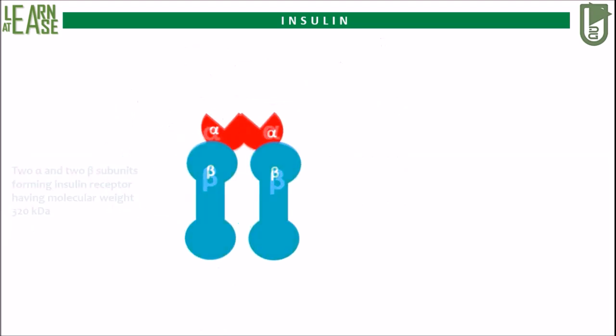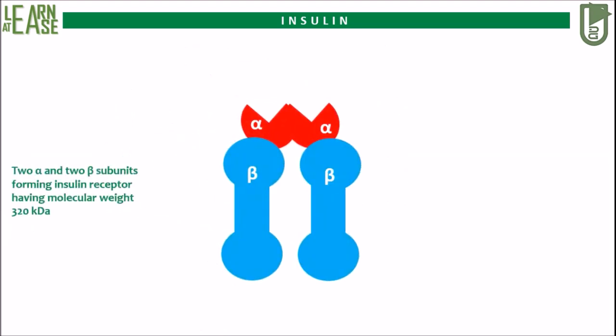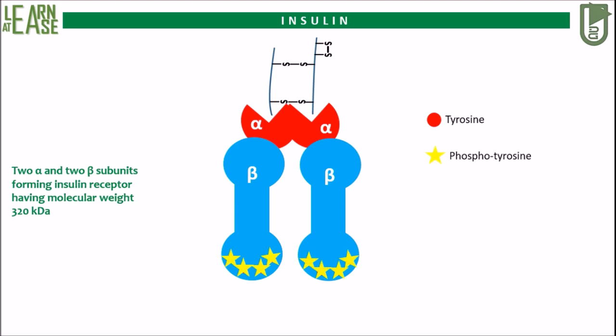Here the detailed mechanism of receptor activation is shown. The insulin receptor is a heteromeric protein having 320 kiloDalton molecular weight. The cytosolic region of the beta subunit possesses several tyrosine residues. When insulin binds to the receptor, the alpha subunits will drive the change in conformation of the beta subunits. This causes autophosphorylation of various tyrosine residues in the beta subunit. Thus, the tyrosine residues will become phosphotyrosine, which will then act as second messengers. Due to these phenomena, the insulin receptor is also categorized as an autophosphorylating tyrosine kinase receptor.